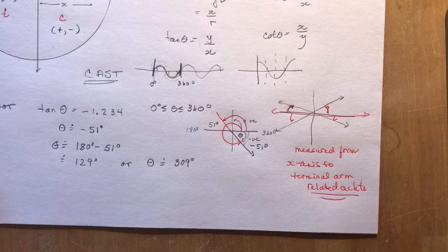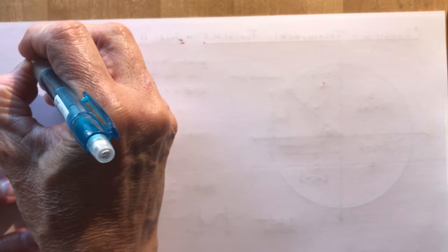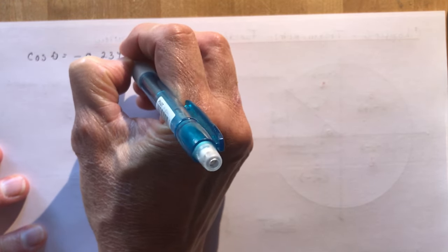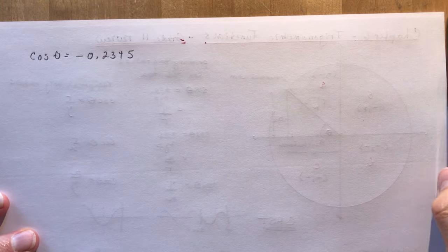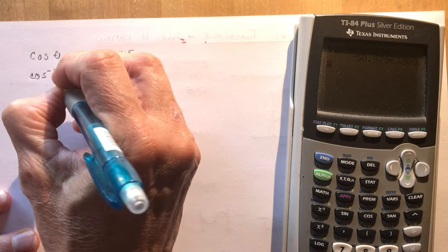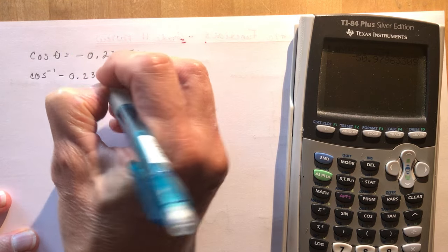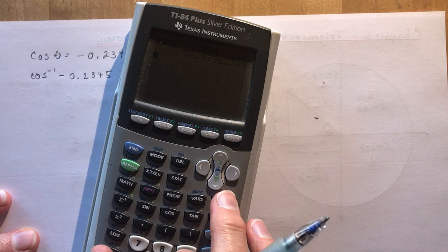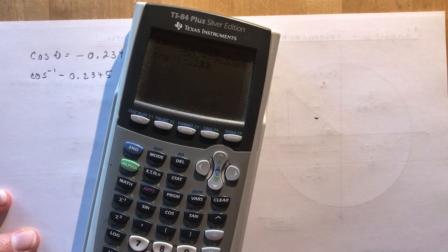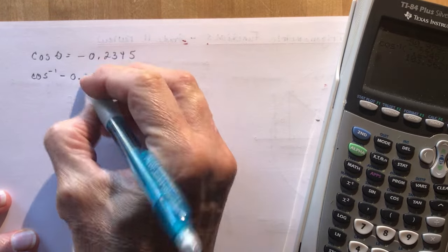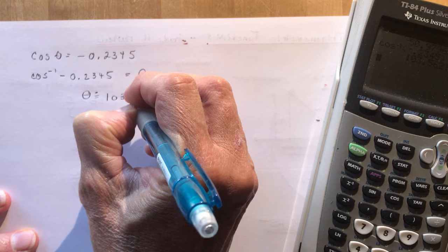Let's do another example. Say the cos of theta equals -0.2345. To find an angle, I do the inverse: cos⁻¹(-0.2345) = theta. I plug that into my calculator — second cos, -0.2345 — and I get approximately 103.6 degrees.